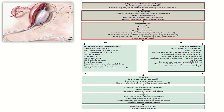Next comes monitoring and investigation: insert 14-gauge cannulas on both sides and send blood for relevant investigations. Immediately start the medical management of PPH — after massaging the uterus, administer oxytocin, ergometrine, carboprost, misoprostol, and tranexamic acid.